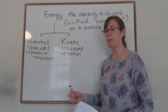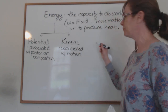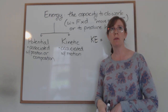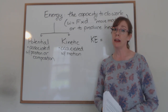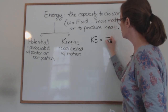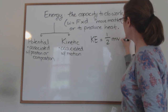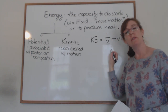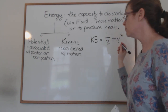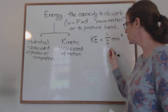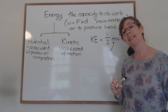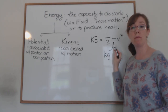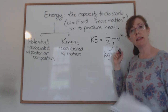Let me expand on this from where we left off. Back in Chapter 5, we learned the kinetic energy equation: KE = ½mv², where m is mass and v is velocity squared. From this equation we can deduce the unit for energy. The SI unit for mass is the kilogram, and the SI unit for velocity is meters per second — since velocity is distance over time.